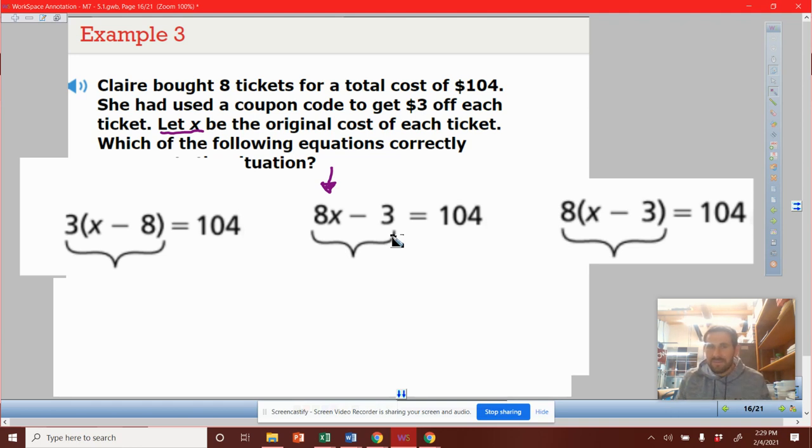and then here we subtract three. So that is really just saying, here's the price of all the tickets, and then you get a $3 discount. But it should be $3 off each ticket,